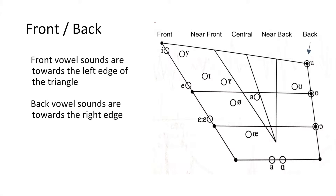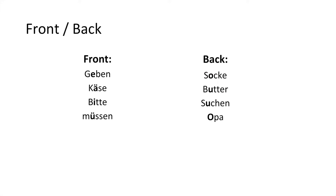The first way that the vowel triangle can be broken down is by classifying vowel sounds from front to back. Vowel sounds near the front are formed when the tongue is towards the front of the mouth. Contrary to this, vowel sounds at the back of the triangle will occur with the tongue towards the rear of the oral cavity. On the left are words that are formed at the front of the mouth and the words on the right are formed at the back. You should be able to tell the difference of the location of your tongue while saying these. Let's practice together.